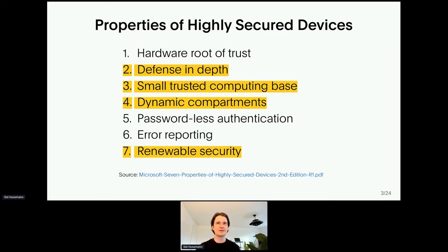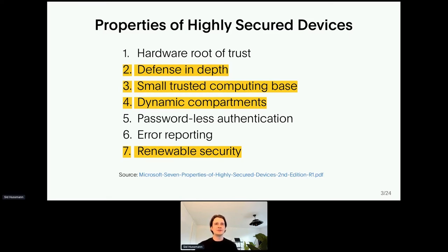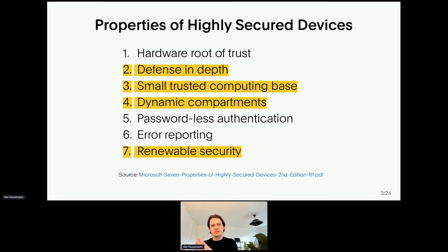Fifth, passwordless authentication — basically user-certificate-based authentication. Sixth, error reporting — that's a no-brainer; Ian talked about this at length. We want to know when and why our devices fail. Seventh, renewable security. There are two main categories: fix vulnerabilities quickly with updates, and detect and recover from breaches. A compromised kernel is really hard to detect and recover from — you could do it in firmware, thinking HEADS or secure boot.